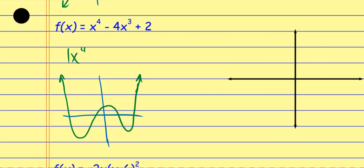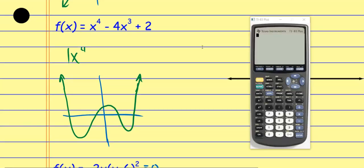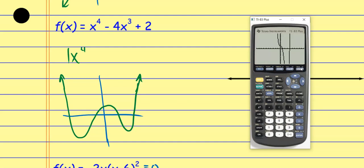I'm going to punch this in, find all the important values including the x-intercepts, and then draw a more accurate depiction. On the graphing calculator, I go to the Y= menu and punch in x to the fourth using the caret button, minus 4x to the third power, plus 2. I hit the graph button. I can see this time we have an idea of what it looks like, though it doesn't quite match the quick sketch we drew.